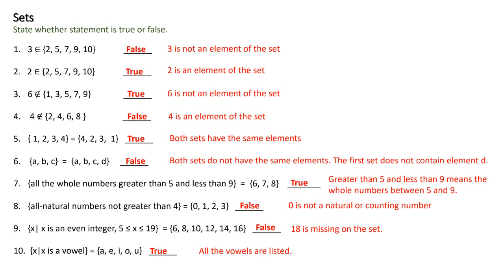All the whole numbers greater than five and less than nine: the whole numbers greater than five are six, seven, eight, nine and so on, but they also have to be less than nine. So those numbers are only six, seven, and eight. The set given as a list is just six, seven, and eight — so these two sets are equal, one given in the English language and the other as a list. Next: all natural numbers not greater than four. Zero is not a natural number, so the statement is false.